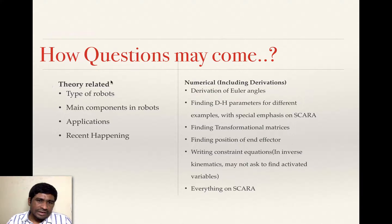The first one is theory related and the second one is numerical, including derivations. This time what I am expecting is they may ask you to derive some derivations. If I consider theory related, there are very few questions. Basically what are the types of robots we have already dealt in this chapter and what are the main components in robots.